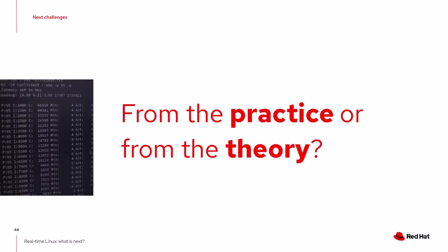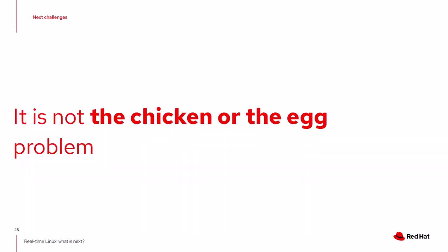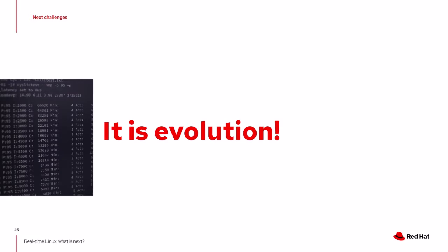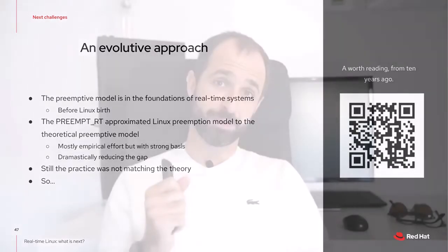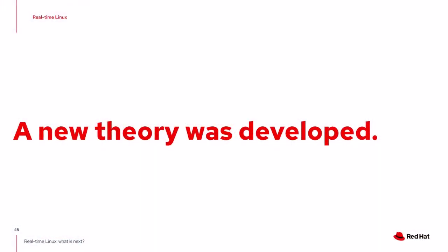Is Linux now a theoretically proven real-time operating system? Obviously no — there is still a long way to go. The main metric for real-time systems is response time, and scheduling latency is only a fundamental step, not sufficient. Scheduling latency is just about when the task starts running, not when it delivers the final result. The next question is: should we start from the practice or from the theory? This is not a chicken-or-egg problem — it's an evolution problem. The preemptive mode existed in real-time theory since the 1960s–70s, and preempt RT brought Linux closer to that theoretical system.